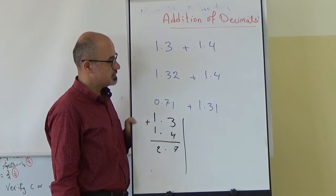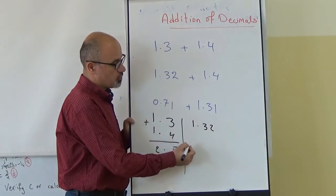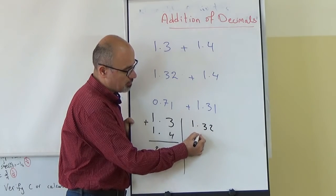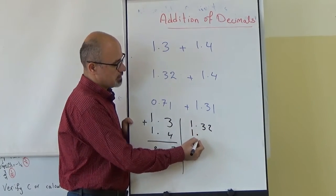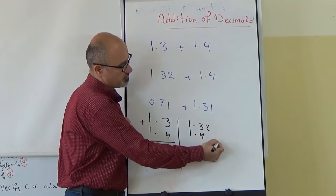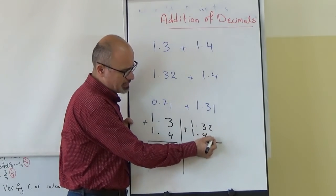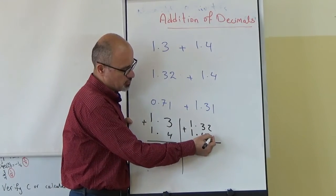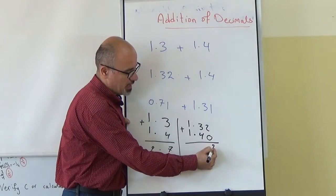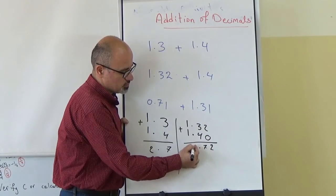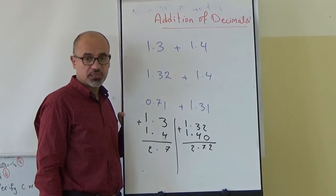Now for the second sum: 1.32 added to 1.4. Again, arrange the decimal point above the decimal point, ones above ones, and tenths above tenths. We have no hundredths in 1.4, so you can leave it blank or put zero. When we add, we get 2.72. That matches what we found earlier.